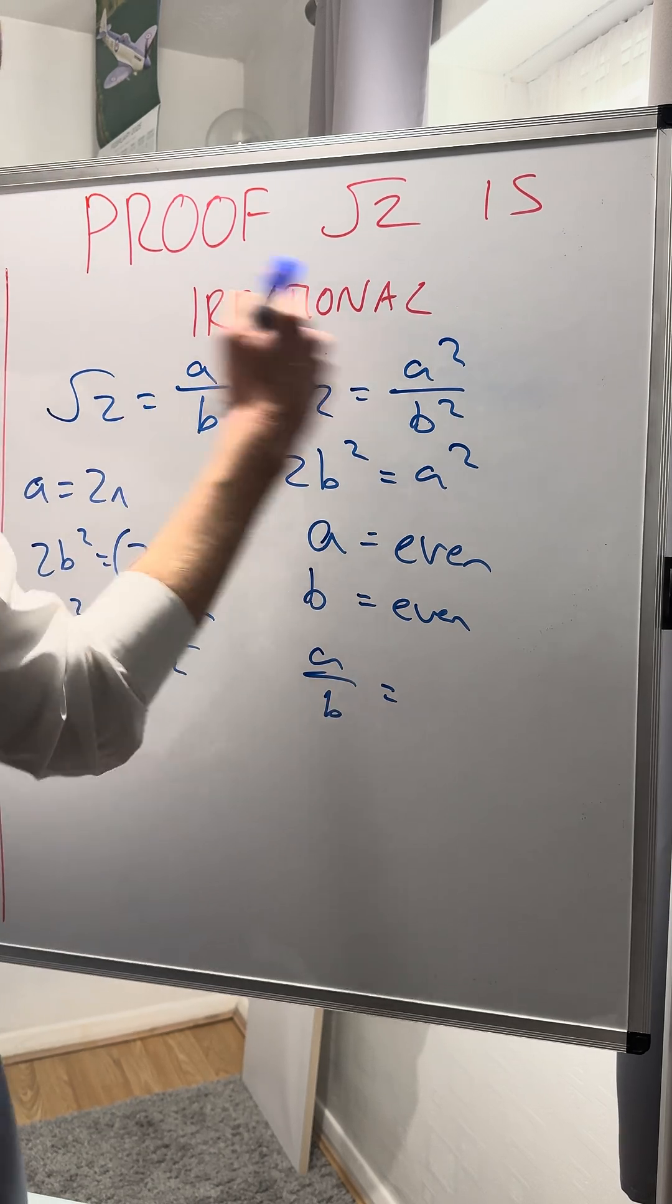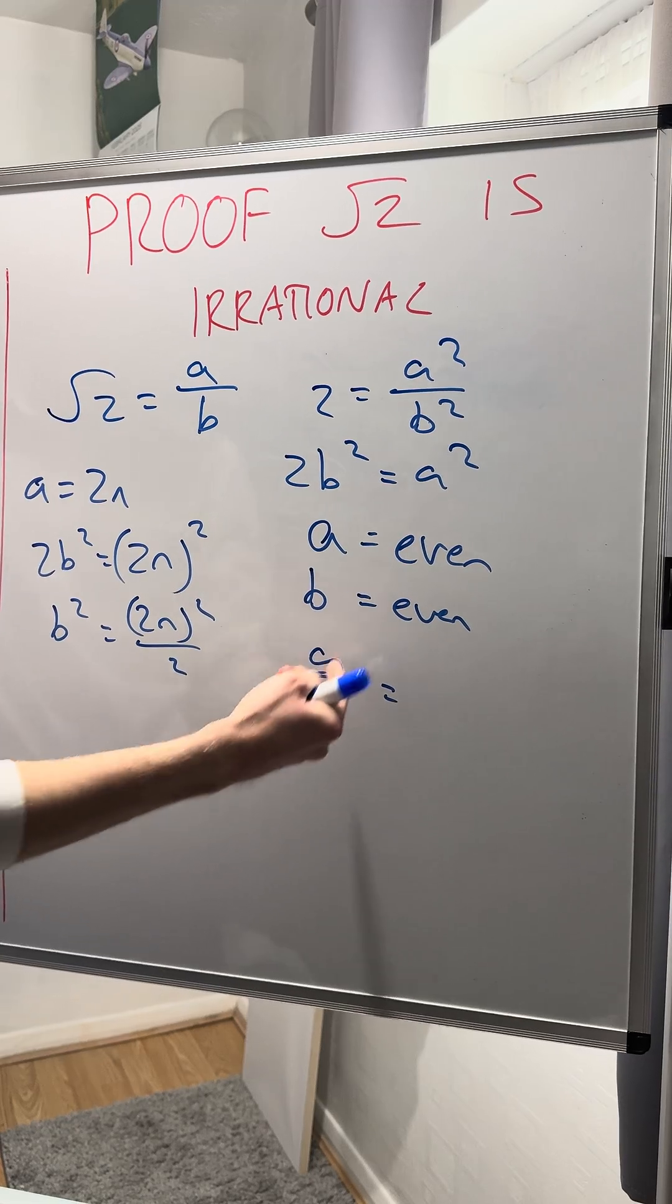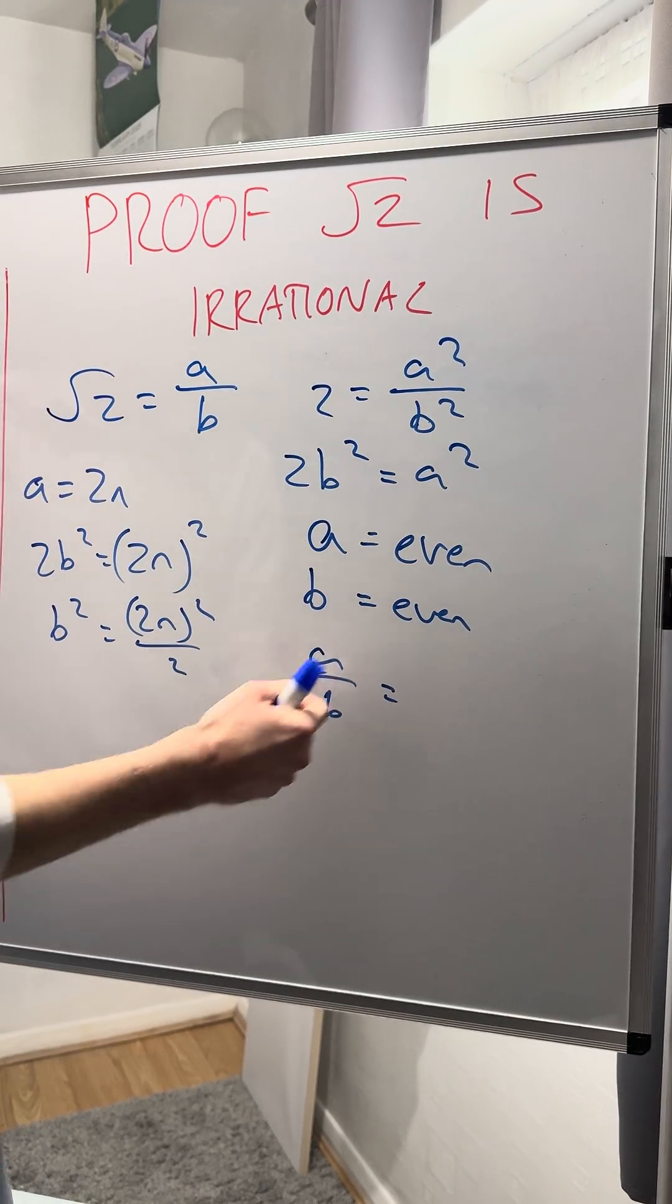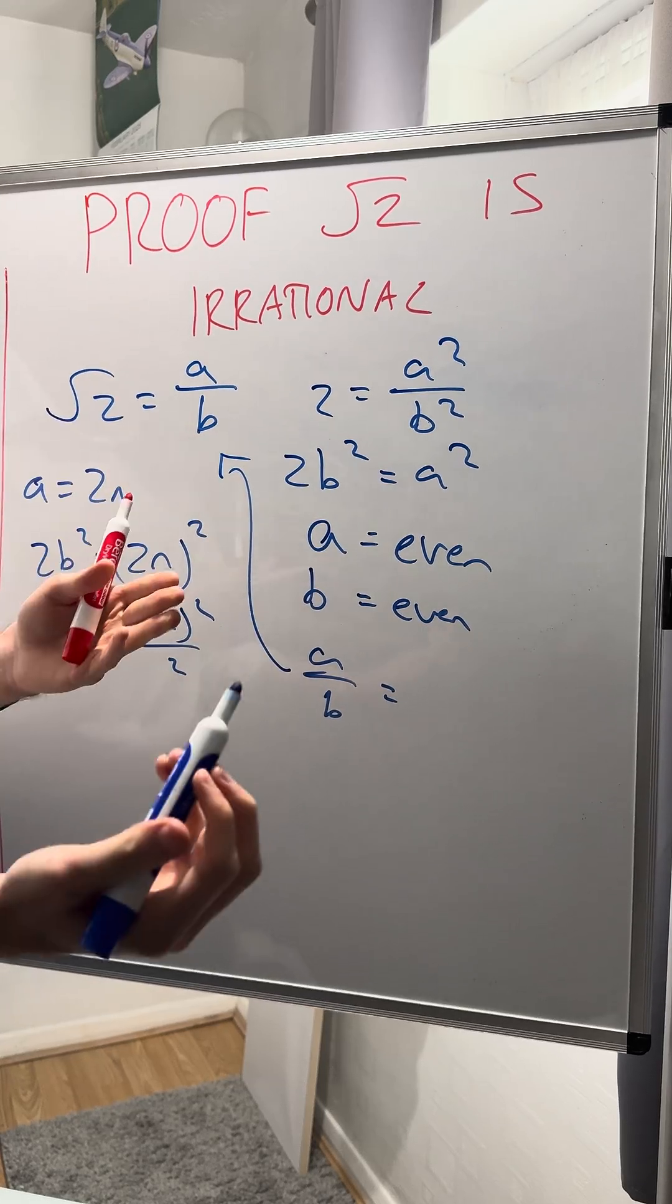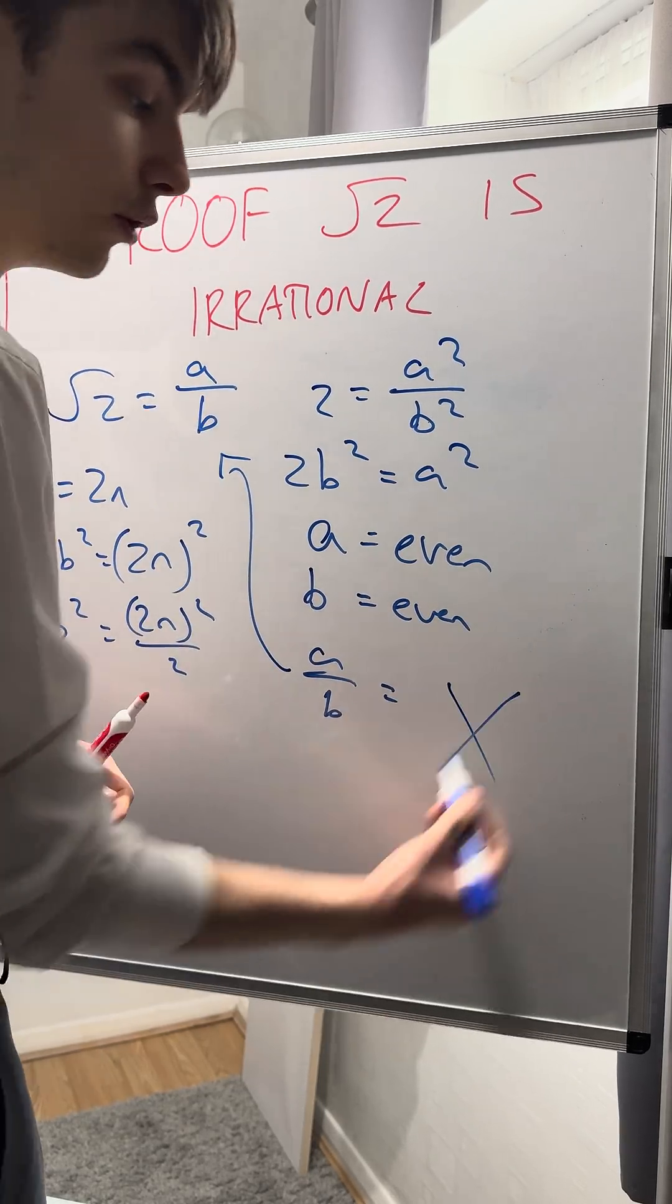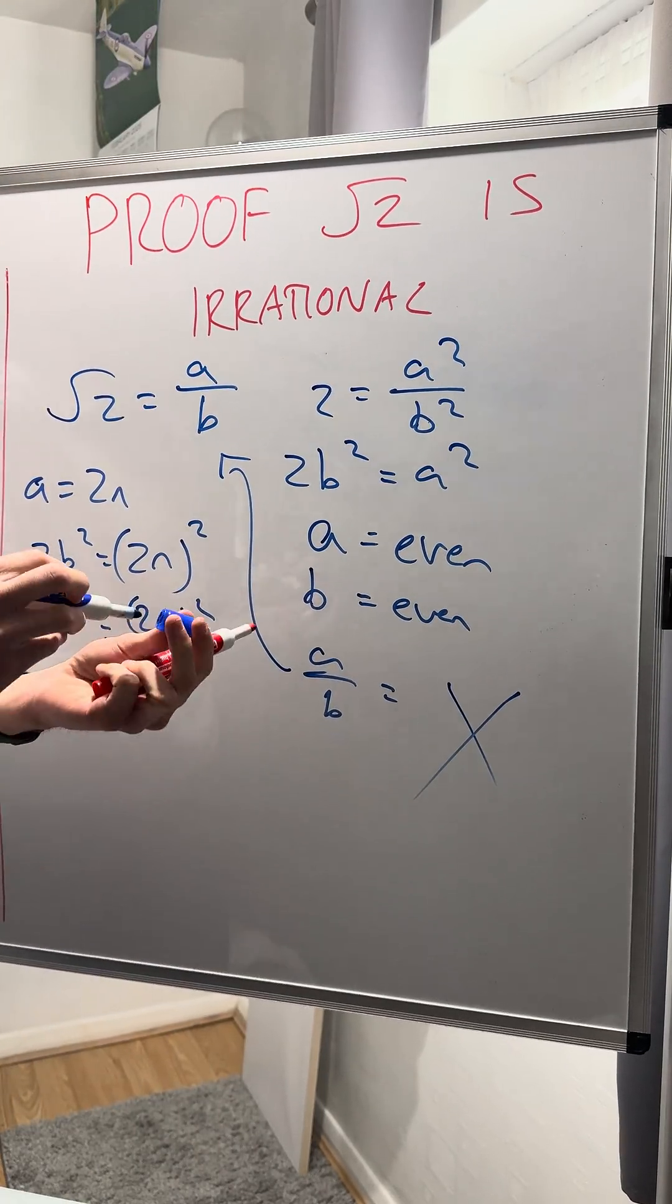But then I'm going to have to do it again. Going through this whole process again, I get that a over b is still even, which means it can still be simplified, which means I have to simplify it again. I'm stuck in an infinite loop, and being stuck in this infinite loop proves that root 2 is irrational.